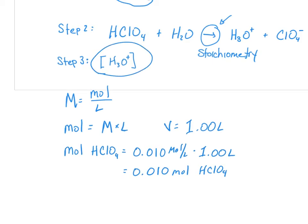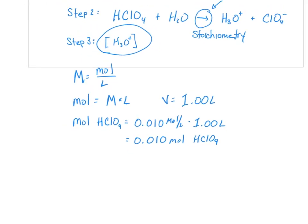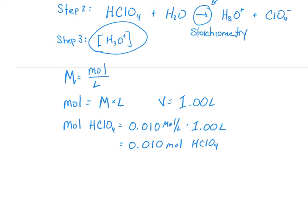But that's not what we want. We want to find the concentration of H3O+. So to do this, we are going to need to do our stoichiometry based upon our reaction to convert from moles of HClO4 to moles of H3O+.